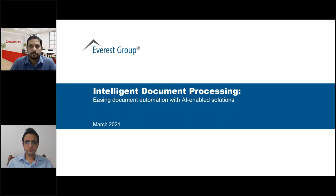Hello and welcome to today's webinar on smart enterprise automation, with a focus on easing document automation with AI-enabled intelligent document processing. Thank you for being here. I am Rakesh from Datamatics, your host. Our guest speaker is Anil Vijayan, a leading IDP analyst and vice president at the Everest Group, joined by Saurabh Sharma, AVP of product marketing at Datamatics. Anil will give an overview of IDP, adoption, success factors, and outlook, followed by Saurabh on the Datamatics intelligent automation platform TrueCap.